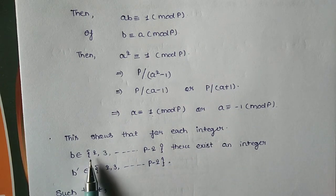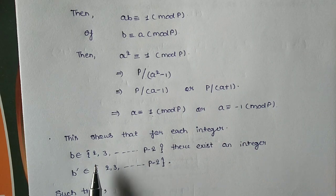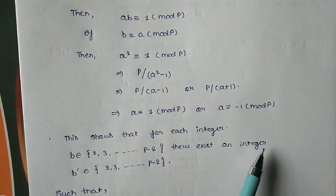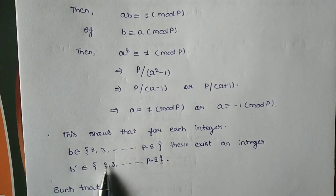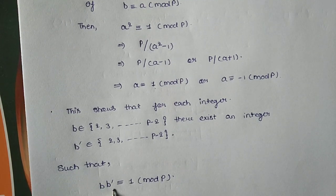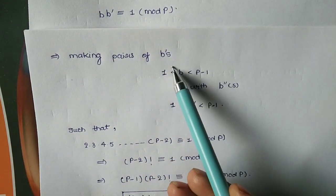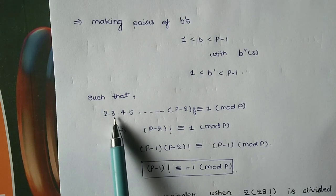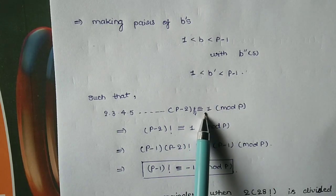This shows that for each integer from 2, 3, ..., p-2, there exists another integer b' also in {2, 3, ..., p-2} such that b·b' ≡ 1 mod p. These integers pair up, so the product 2·3·4·5···(p-2) ≡ 1 mod p.